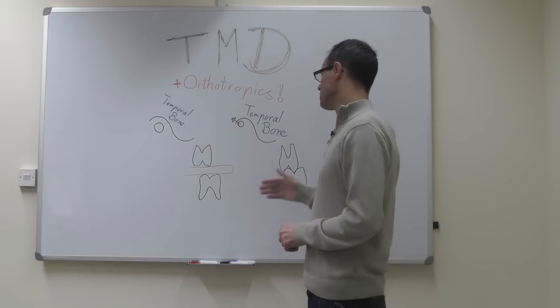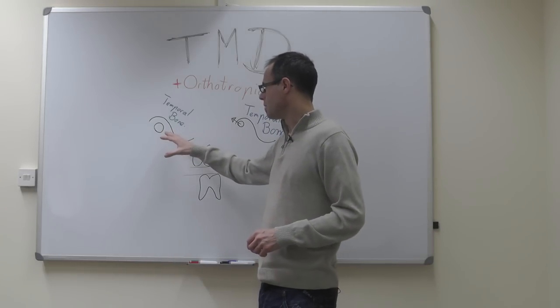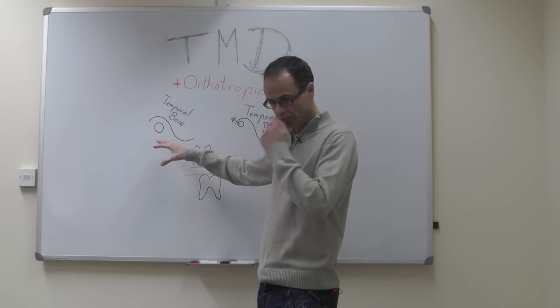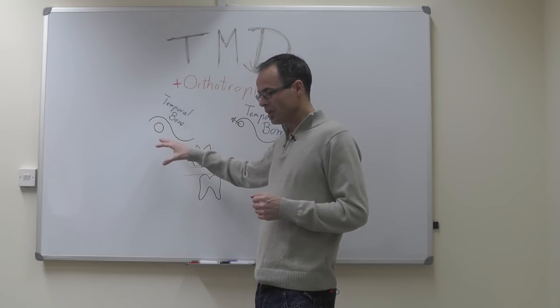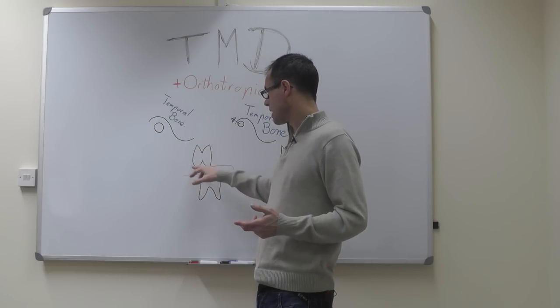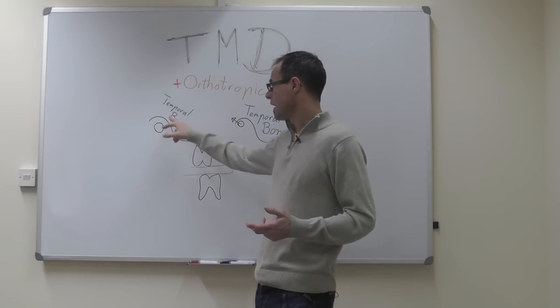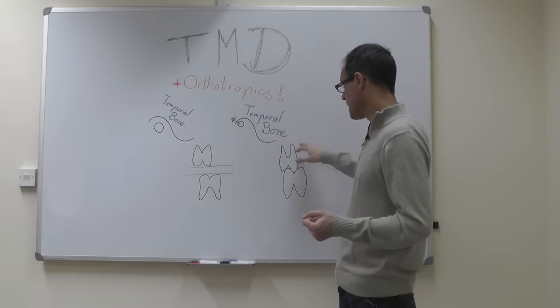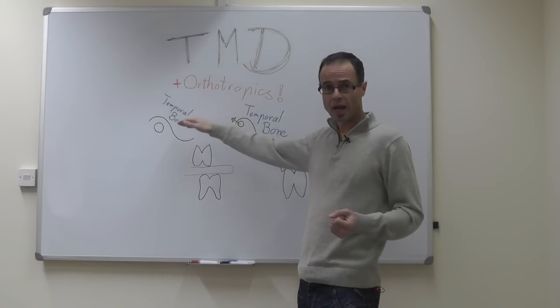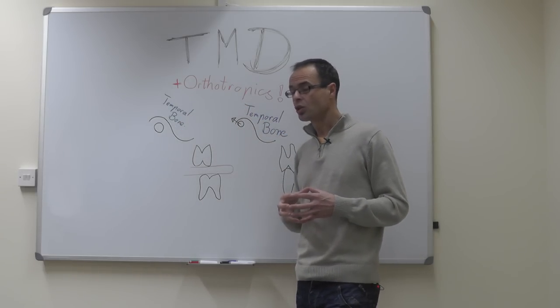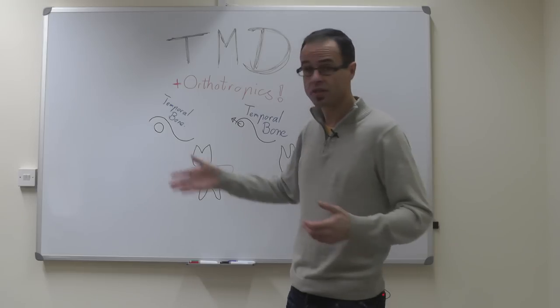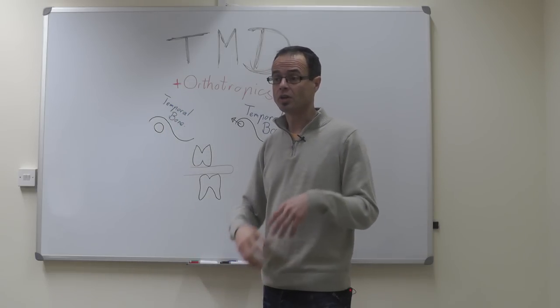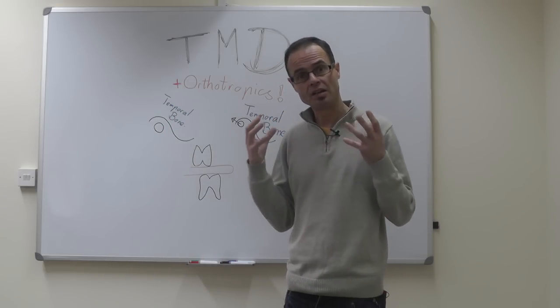I described the difference between people who, in these situations, at rest seem to have a space between their teeth, and their jaw joint is completely centered. But when biting together, the jaw joint goes up and back. I'm suggesting the cause of this is actually because they rest with their teeth open, because this is helping them clear their airway.